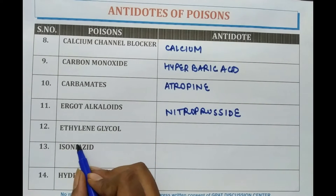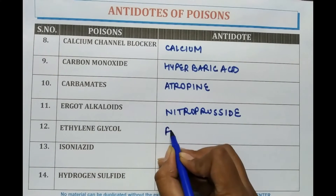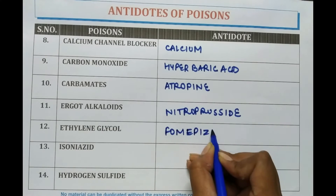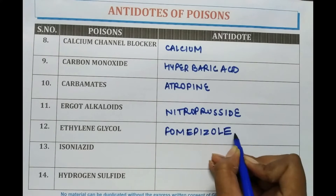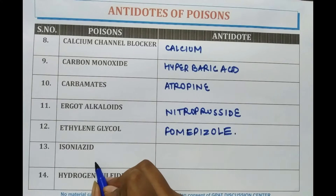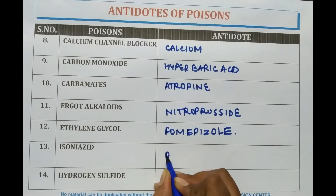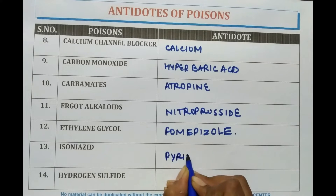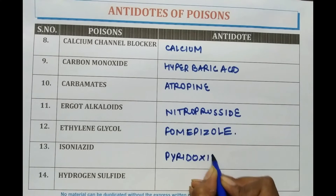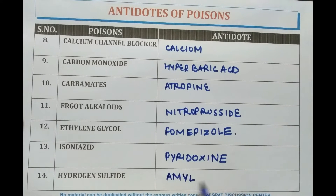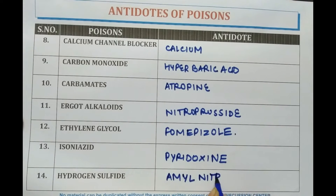In case of ethylene glycol poisoning, Fomepizole is given as an antidote. In case of isoniazid poisoning, pyridoxine is given as an antidote. For hydrogen sulfide poisoning, amyl nitrate is provided.